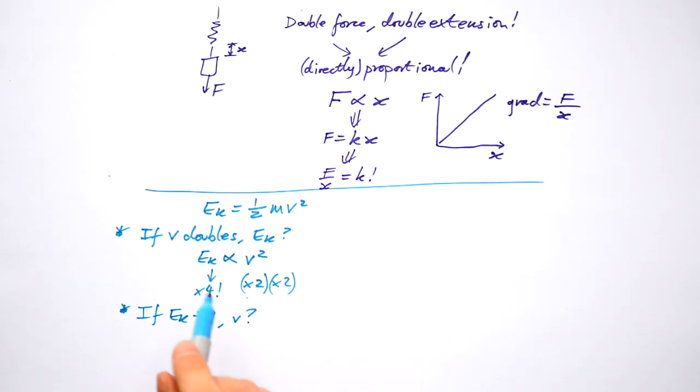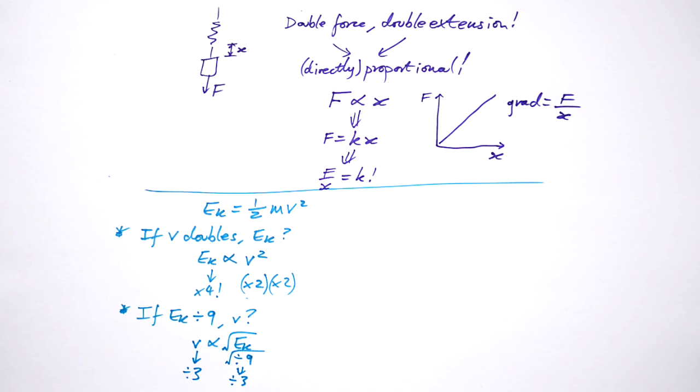Now in this case, I need v is proportional to something because we have Ek is proportional to v squared. That must mean that v is proportional to the square root of Ek. If this is going down by a factor of nine, that doesn't mean that the speed is going down by a factor of nine because of course we're square rooting it. So this has to be going down by a factor of the square root of nine. In fact, that's going to be divided by three. So the speed goes down by a factor of three.